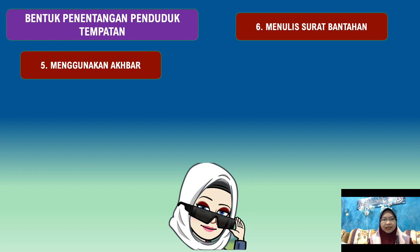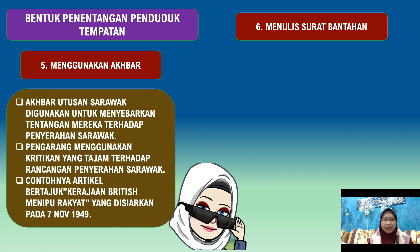Bentuk penentangan dalam bentuk akhbar: Akhbar Utusan Sarawak digunakan untuk menyebarkan tentangan mereka terhadap penyerahan Sarawak. Pengarang telah menggunakan kritikan yang tajam terhadap rancangan penyerahan Sarawak. Contohnya, artikel bertajuk 'Kerajaan British Menipu Rakyat' yang disiarkan pada 7 November 1949.